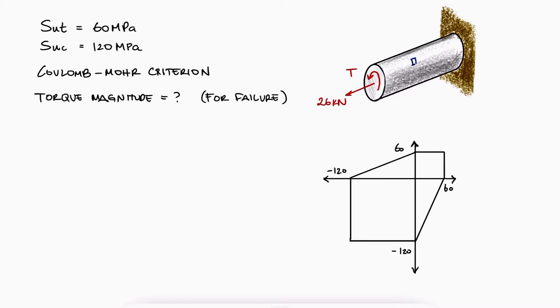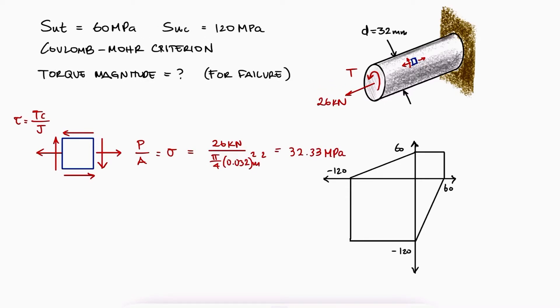For any element on the surface of the rod, we would see a normal stress caused by the axial load and a shearing stress tau caused by the torque T. The normal stress would be equal to 32.33 MPa and the shearing stress will be dependent on the torque T.